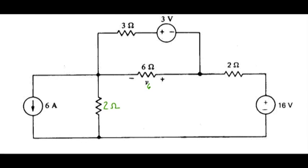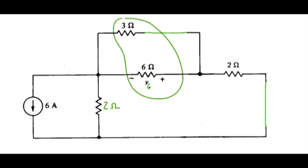So we replace this with a short circuit and replace that with a short circuit. Next, combine those devices in parallel and we've got 1 over 1/3 plus 1/6 and that equals 2 ohms.